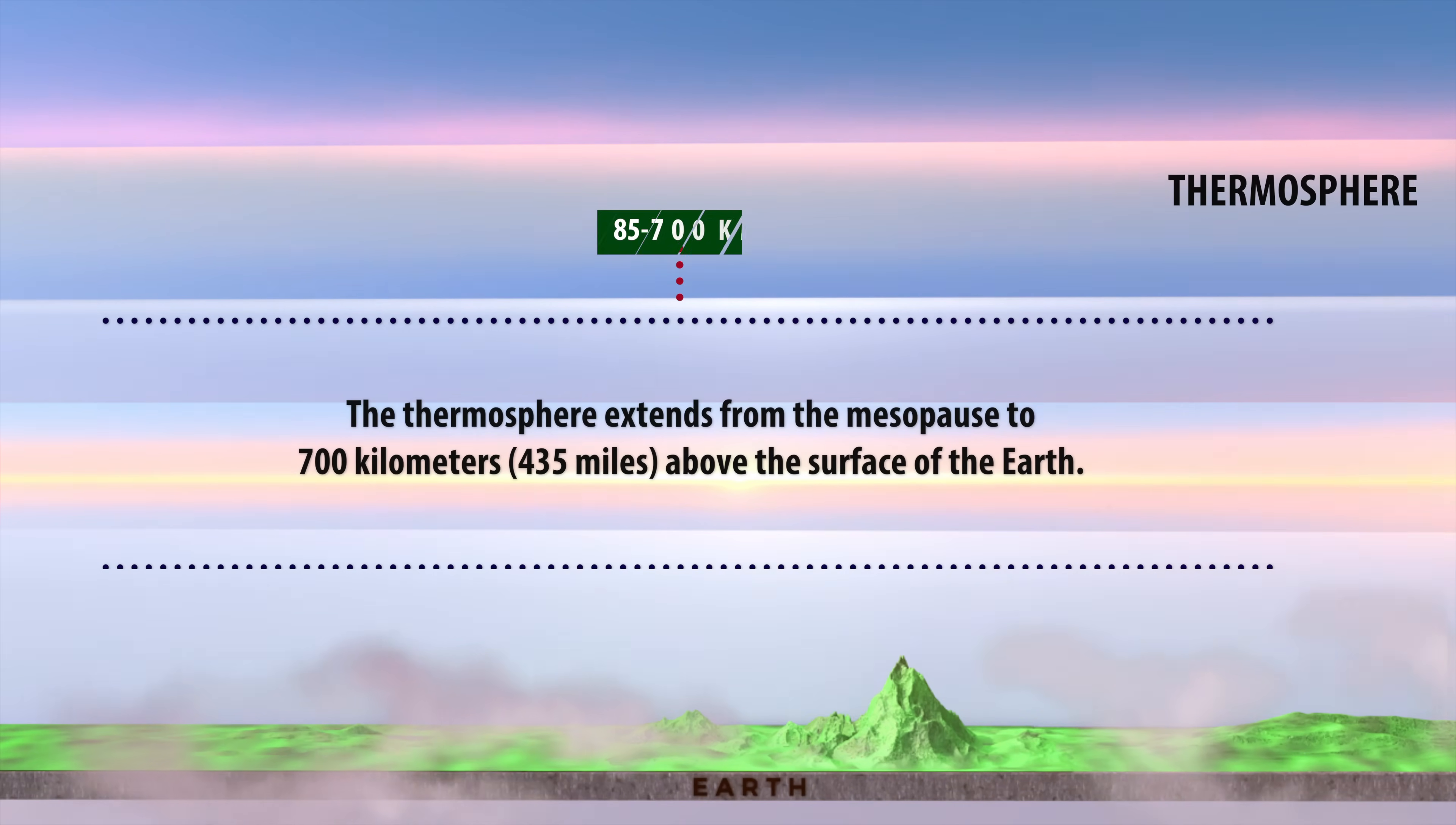The thermosphere extends from the mesopause to 700 kilometers or 435 miles above the surface of the Earth.